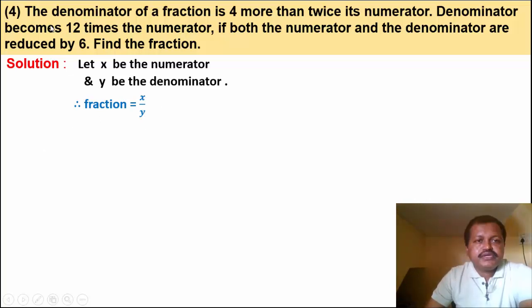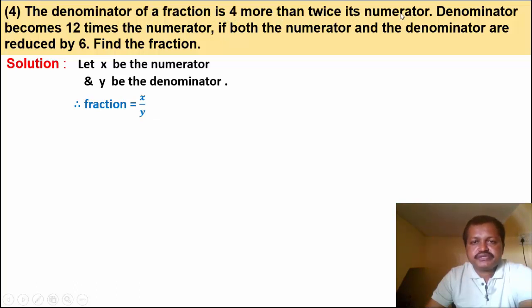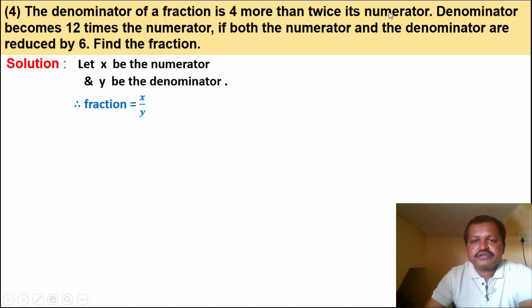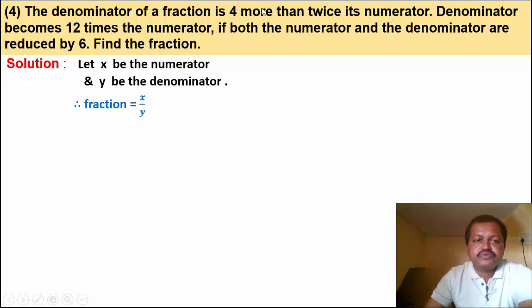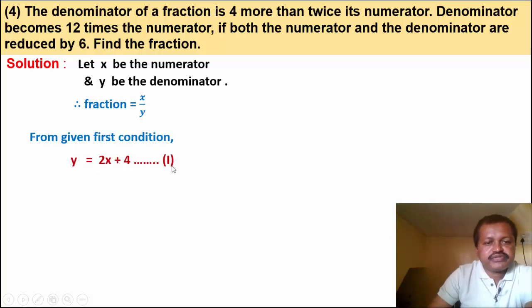From the first condition: the denominator is 4 more than twice its numerator. So y is equal to 2x plus 4. This is equation number 1.